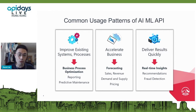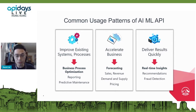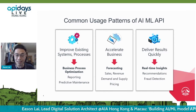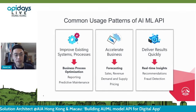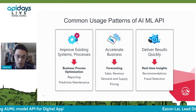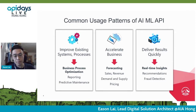The first pillar — improve existing systems — covers business process optimization, reporting, and predictive maintenance. Imagine building an API to do predictive reporting: predicting the next value, detecting whether something is a fraudulent claim. We can build a fraud-detection API, input behavior data, and predict if something is going wrong. This falls under predictive maintenance. There are many use cases in the space of business process automation.